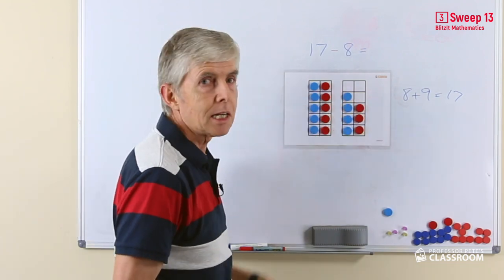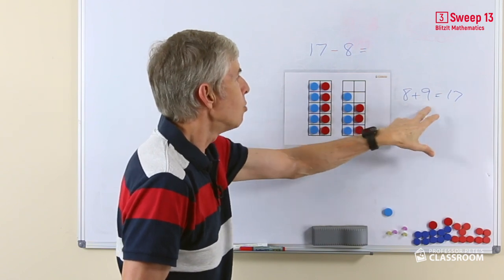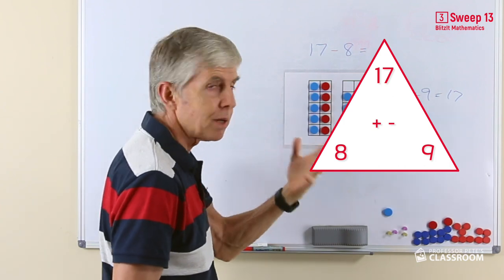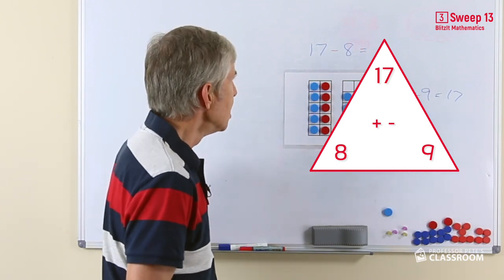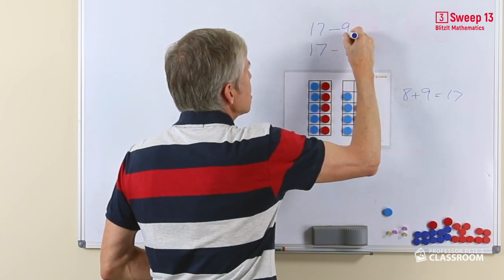basically let's rearrange the numbers. If we started with 17 and took away the 8, what would be left? We can use the number fact family diagram for that, that'll be in the think bubble resources, and of course we can do the 17 take away 9 in much the same way.